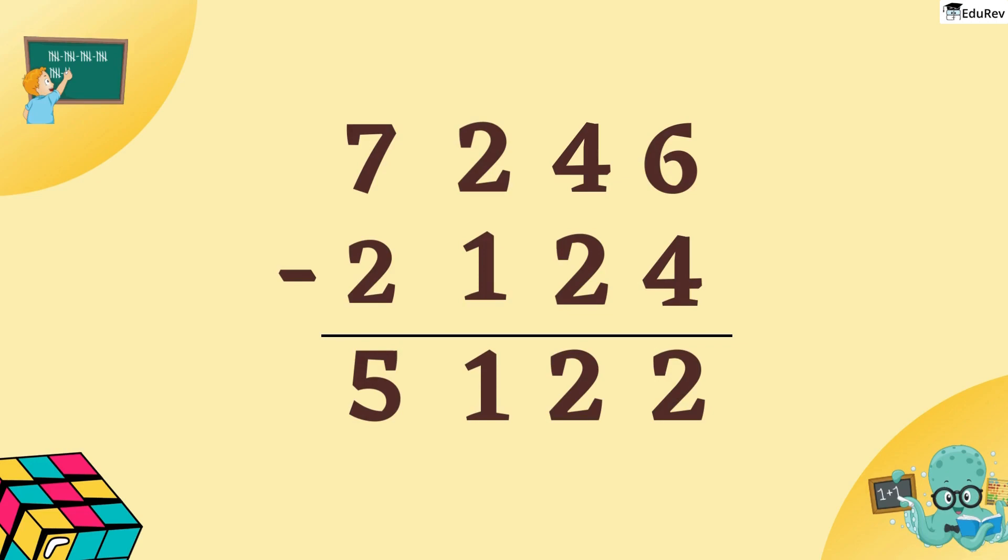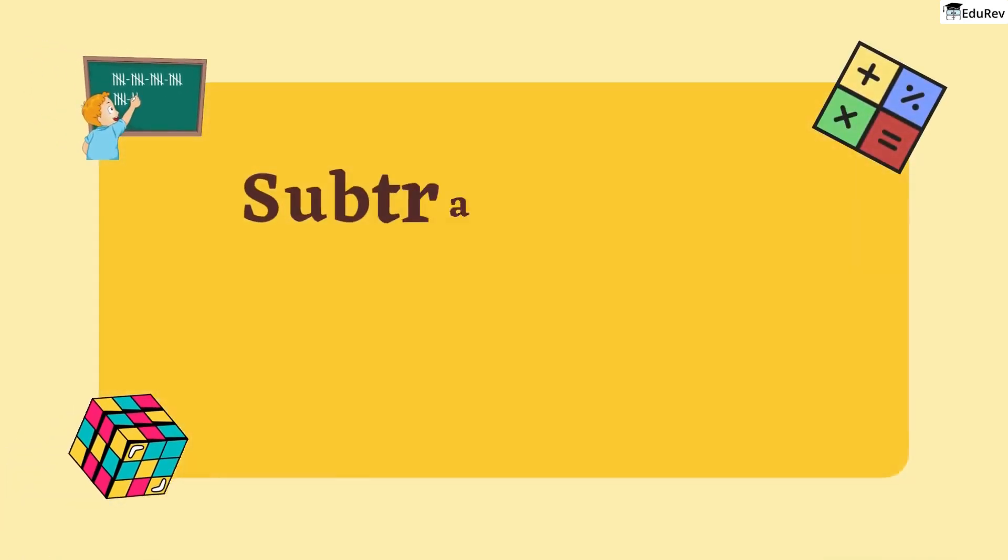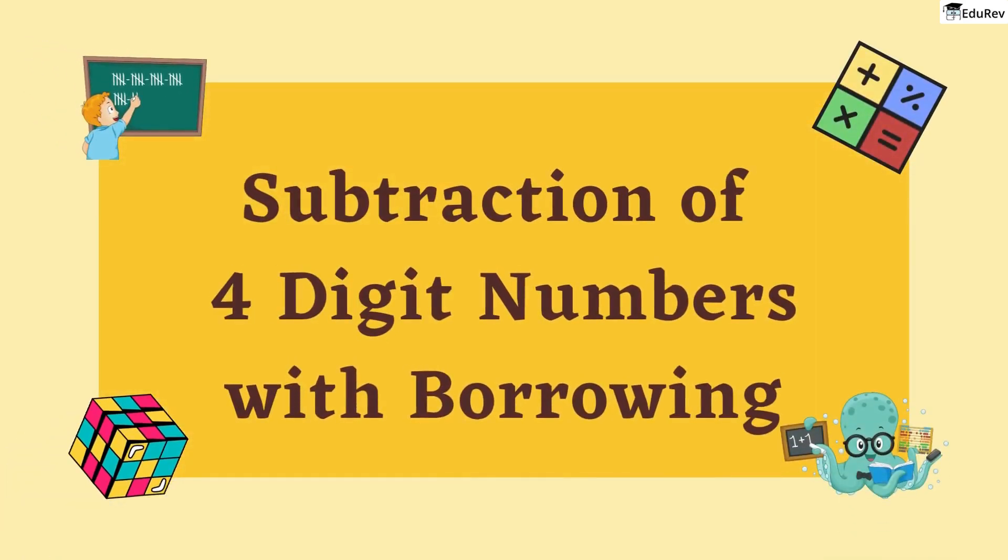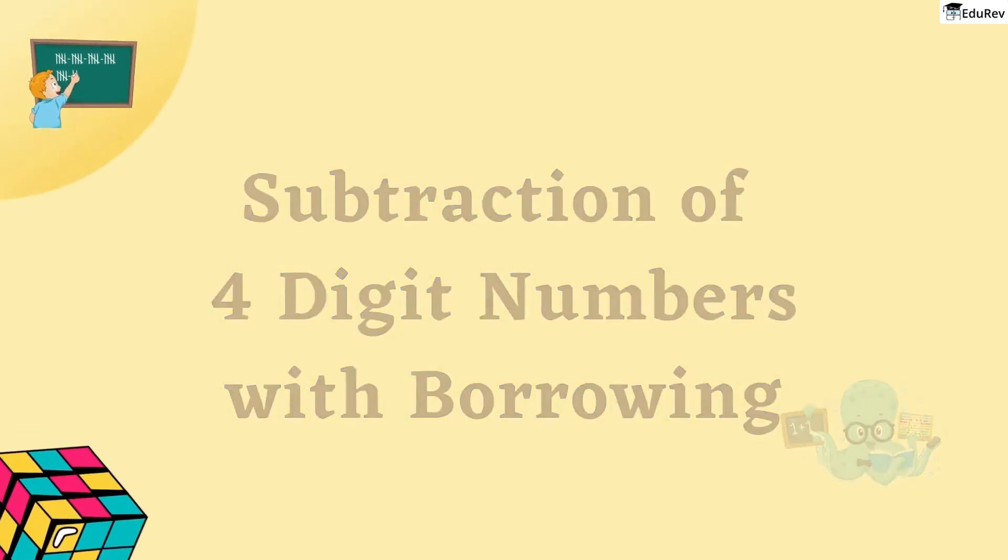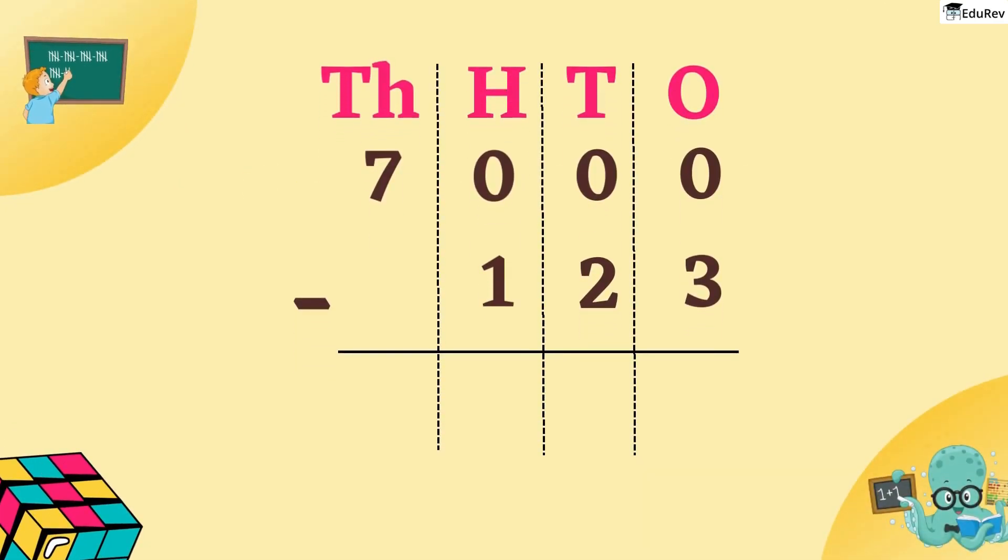See children, how easy that was? Now, let's look at 4 digit subtraction where we have to borrow. Children, let's look at this example: 7000 minus 123.